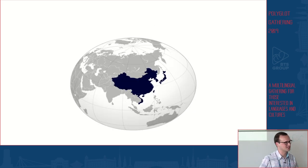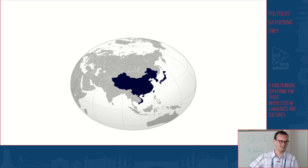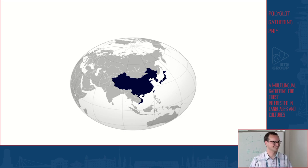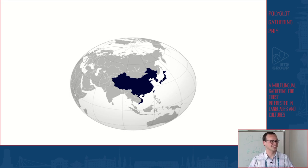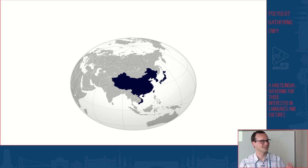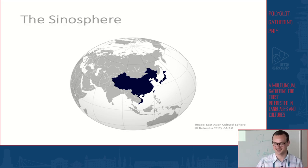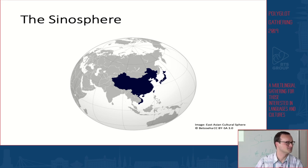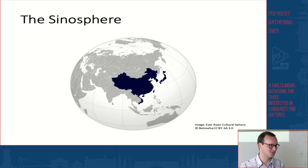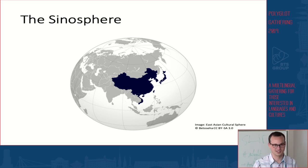Before we start talking about the dictionary itself, is anyone able to tell me what this map depicts, what it represents? It's actually a map of the Sinosphere — the region of the world in which China has historically had a very important linguistic and cultural influence.